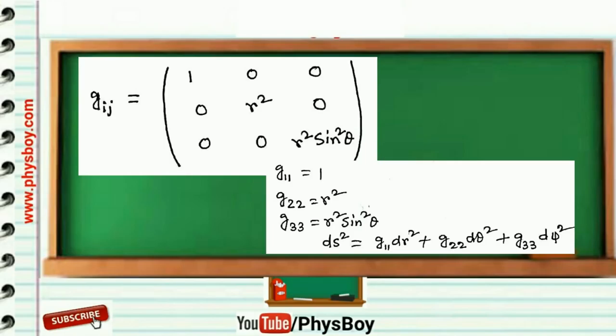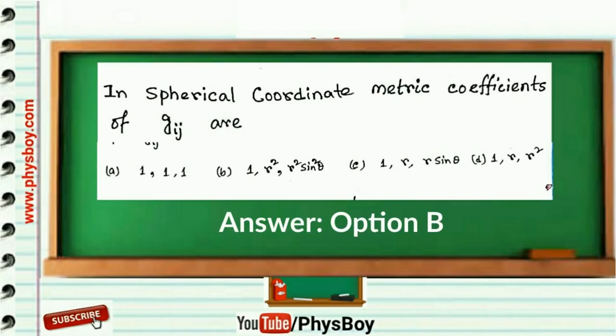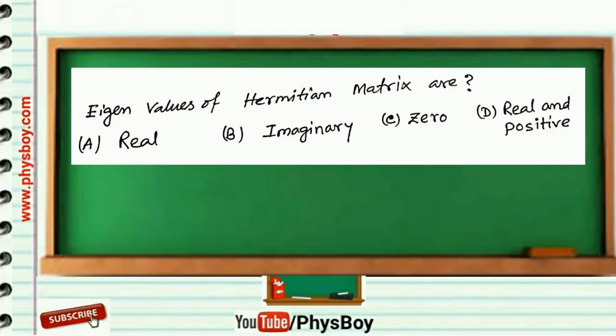One more question: the eigenvalues of Hermitian matrix are: option a: real; option b: imaginary; option c: 0; option d: real and positive. The correct answer is option a: real.